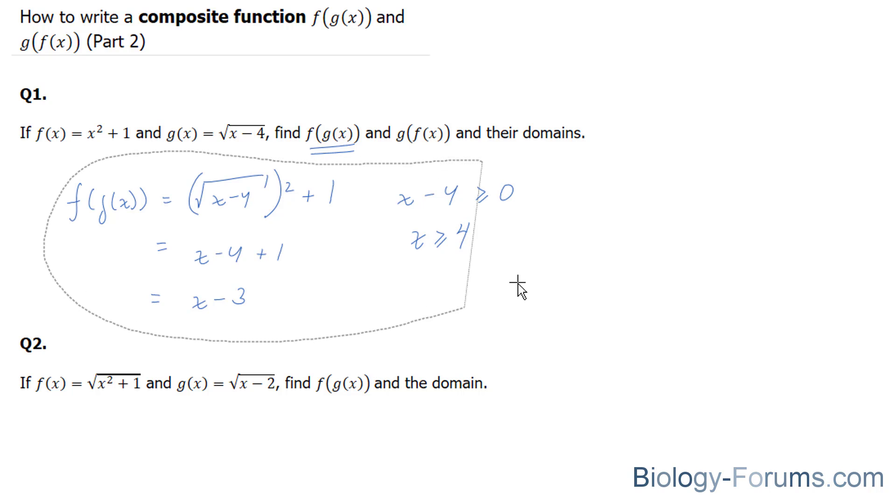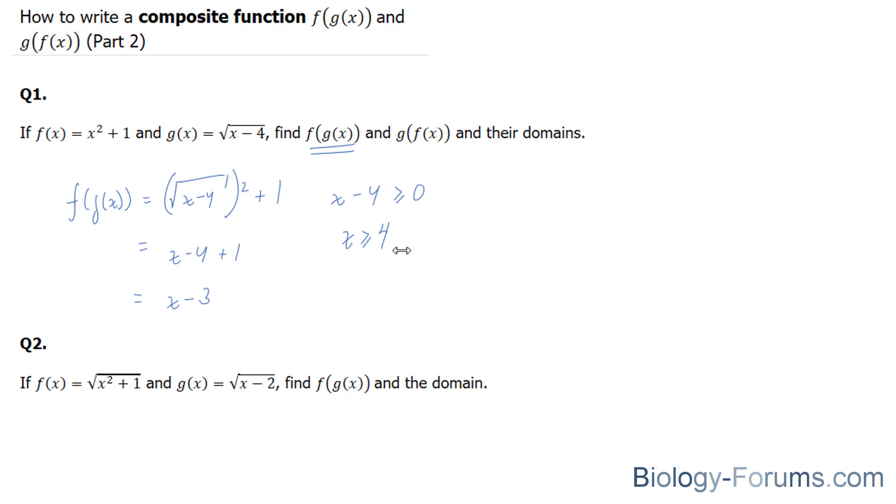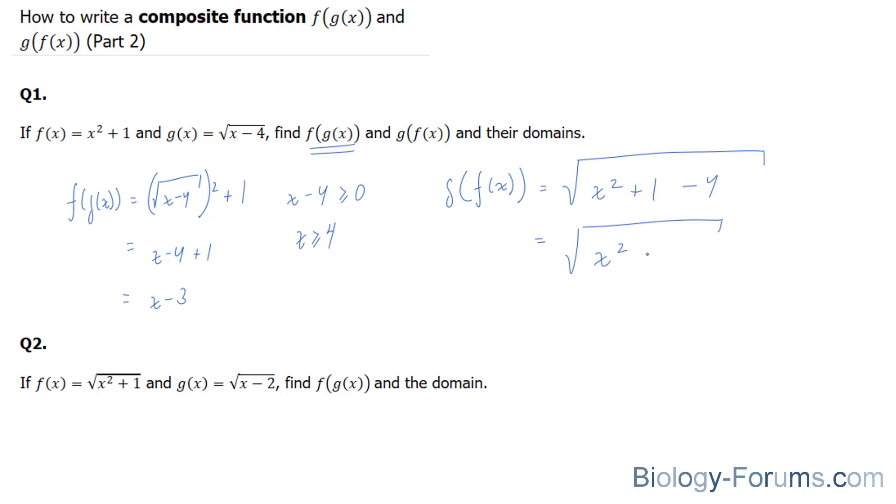So what I'll do is I'll shift this over, and we'll start off with the next one. So here we are expected to find g of f of x. g of f of x is equal to the square root of this x squared plus 1 minus 4. Simplify the radicand. We end up with x squared minus 3.